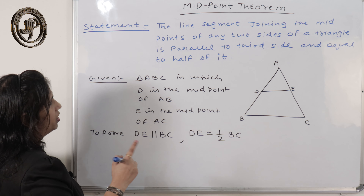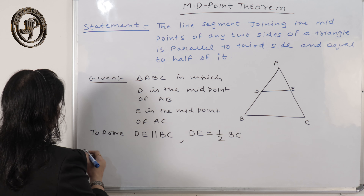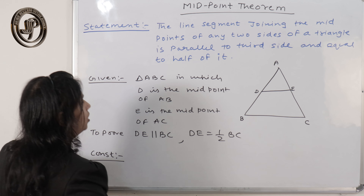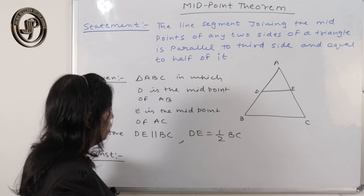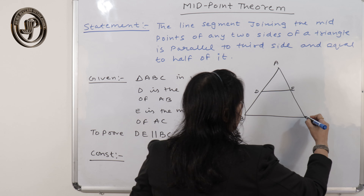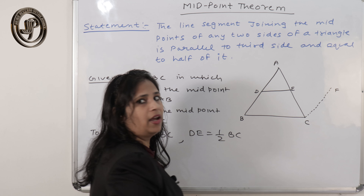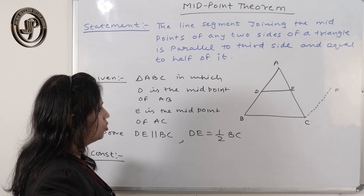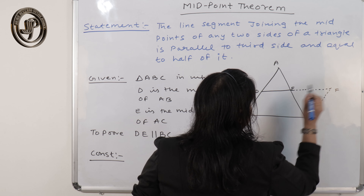To prove: DE is parallel to BC, and DE is equal to half of BC — the line joining the midpoints of two sides is parallel to the third side and equal to half of it. To prove this, I need to construct something. Construction should be drawn in dotted lines so it is clear to the examiner. What I construct: CF parallel to BA, which meets DE when produced.